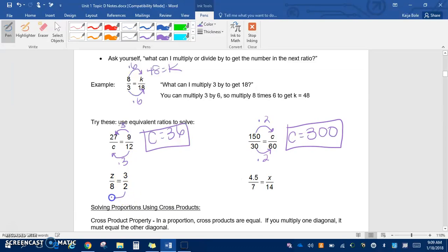Here we're drawing our arrows to the left. How do we get from 2 to 8? We multiply by 4, so we get that c equals 12 here. And then here, how do we get from 7 to 14? We multiply by 2 there, so we multiply by 2 here and get that x equals 9.